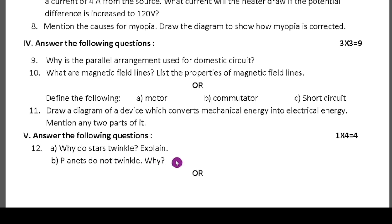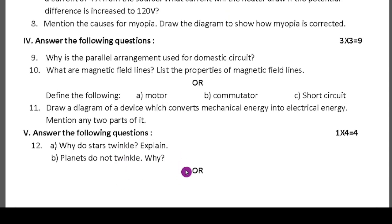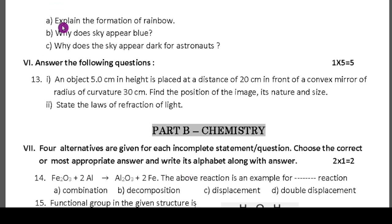Why do stars twinkle? Explain. Three: planets do not twinkle, why? Each question is also easy. Here you can select anyone, there is an option. Another question: explain the formation of rainbow. Why does sky appear blue? Why does the sky appear dark to astronauts? Here any two questions you can select from that question or you can select these three questions.